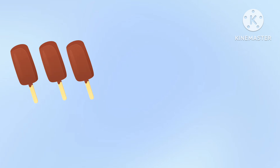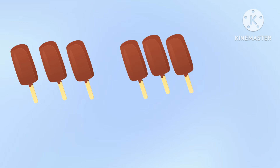Here there are 3 ice creams and another 3 ice creams added. So 3 plus 3 equal to? Let's start counting. 1,